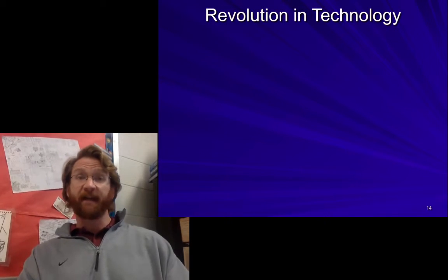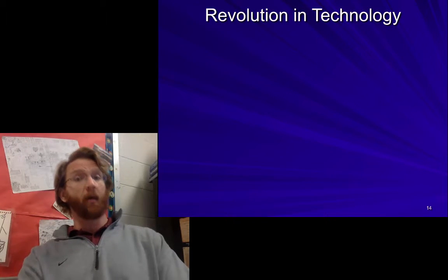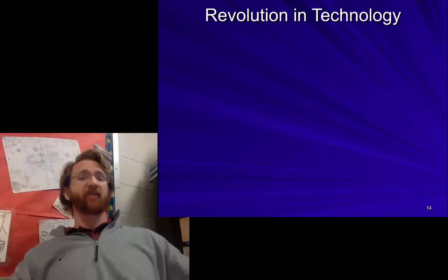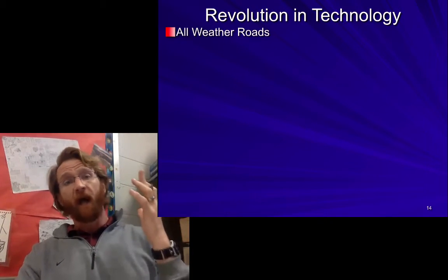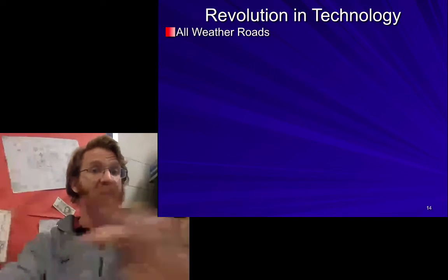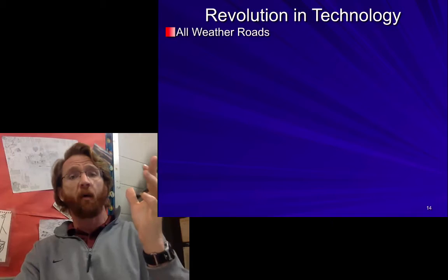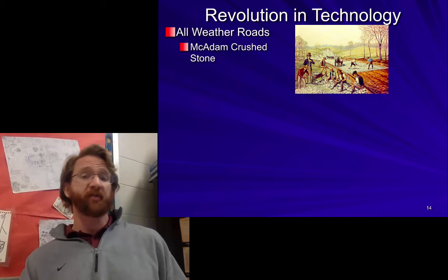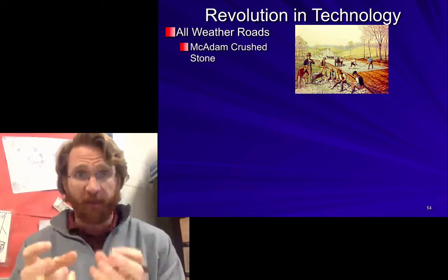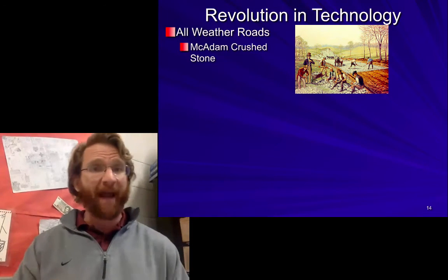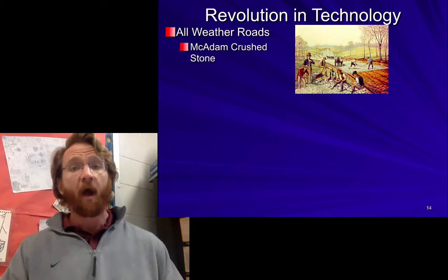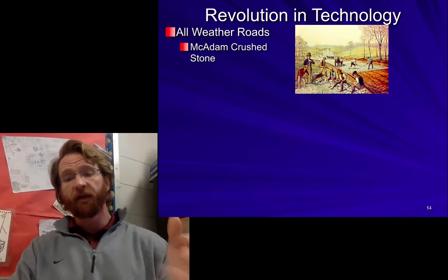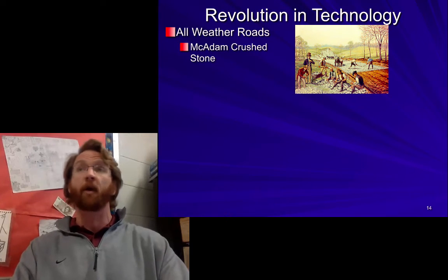Technology had a really big change during the Enlightenment and the revolutionary era — from 1650 to 1850 saw major technological shifts. First came the invention of all-weather roads. The best example is the Macadam crushed stone road. Macadam was a Scotsman who figured out that by leveling small stones over packed dirt, you could have a reliable road that lasted a long time and drained water effectively. There are Macadam roads still around in the country today.